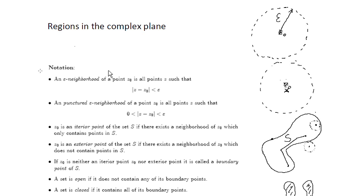Here are some notations. An epsilon neighborhood of a point z0 is all the point z such that the absolute value of z minus z0 is less than epsilon.